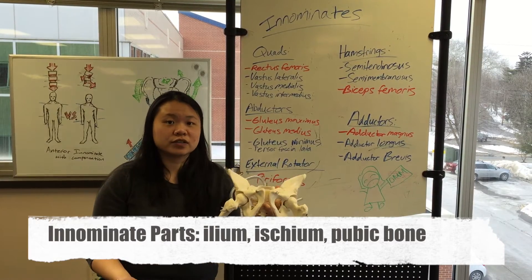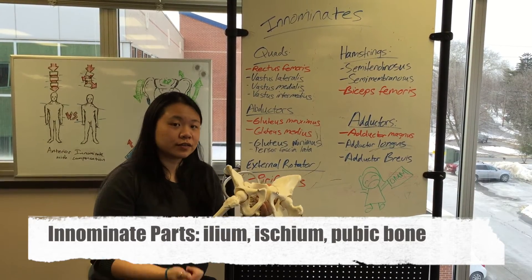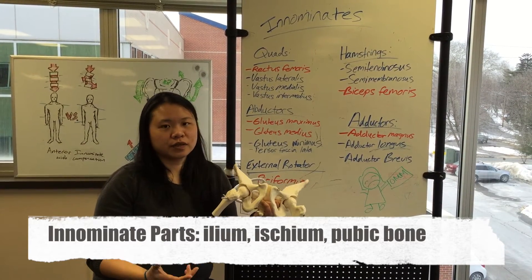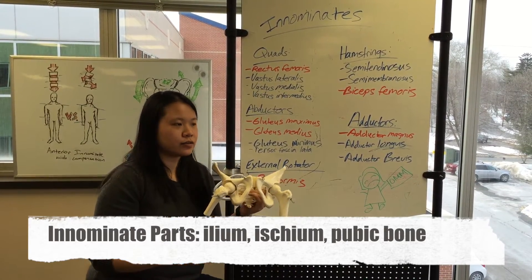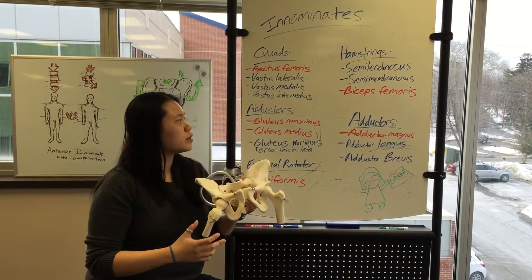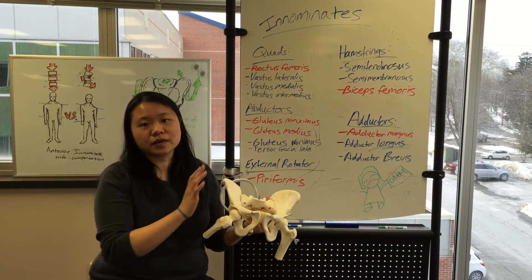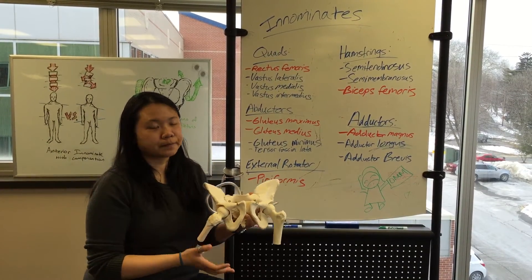So those dysfunctions we just talked about — the anterior inominates, posterior inominates, in-flares, out-flares, and the shears — we just want to talk about some of the muscles that can cause them.